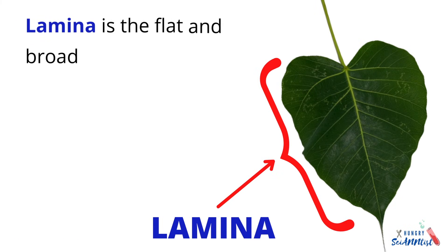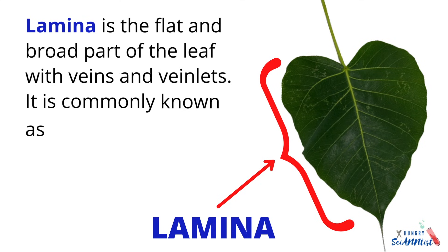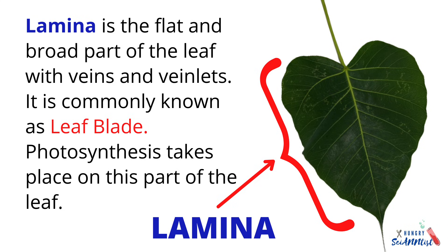Lamina. Lamina is the flat and broad part of the leaf with veins and veinlets. It is known as leaf blade. Photosynthesis takes place on this part of the leaf.